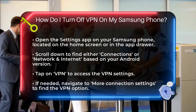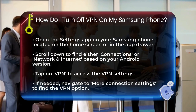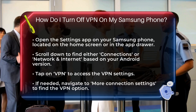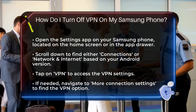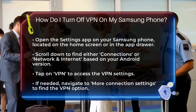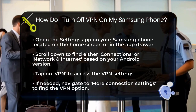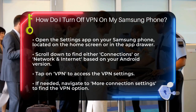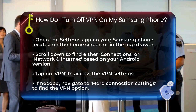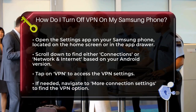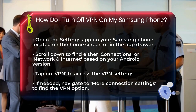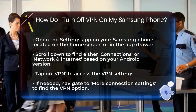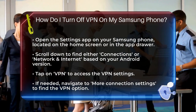First, you need to open the Settings app on your Samsung phone. You can find this app on your home screen or in the app drawer. Once you're in the settings, scroll down and look for the Connections or Network and Internet option, depending on your Android version. Tap on this to proceed.